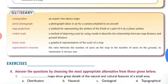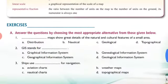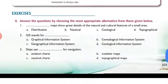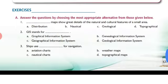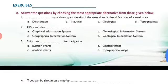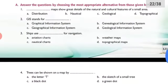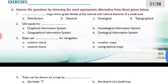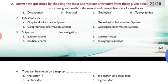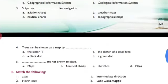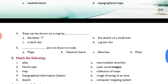Now you have to complete Exercise A, which is 'Answer the questions by choosing the most appropriate alternative from those given below.' Here, five questions are given. You may take a screenshot wherever it is needed.